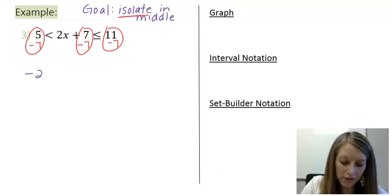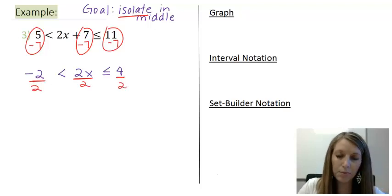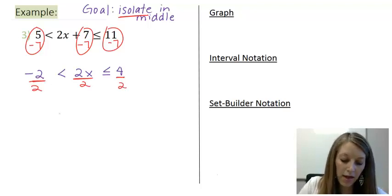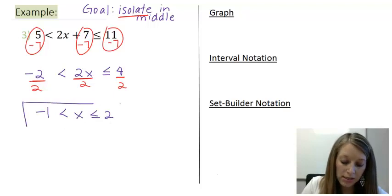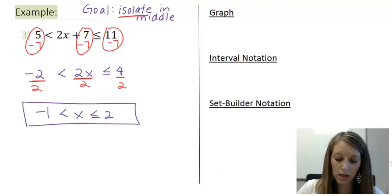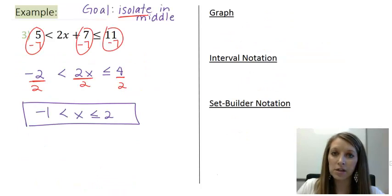That gives me negative 2 is less than 2x is less than or equal to 4. And then to get rid of my 2 in the middle I divide by it. But again I have to do it in all three pieces. So on the left I have negative 1 is less than x is less than or equal to 2. And notice this is the exact same solution that we got the other way but we don't have to do any manipulation to get to that point. That is just our final answer.